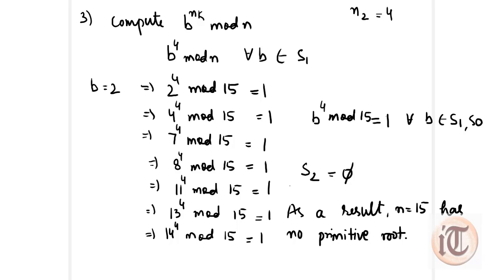This is how we use the Ballian method to calculate all the primitive roots of a particular number n. If you have any doubts, you can ask in the comment section. In my next video I am going to take one more example for n equals 25 and use this Ballian method to calculate all the primitive roots of 25. So keep watching. Thank you so much.